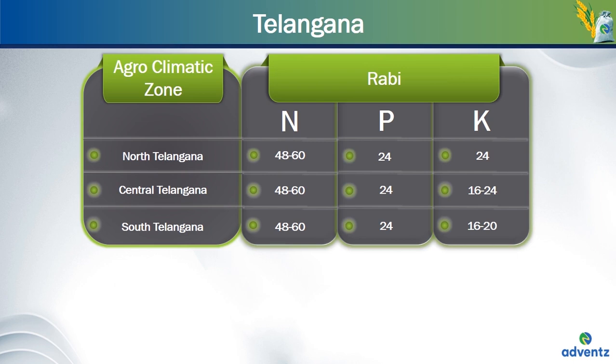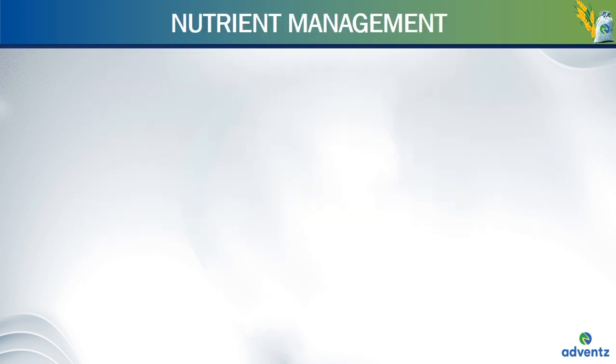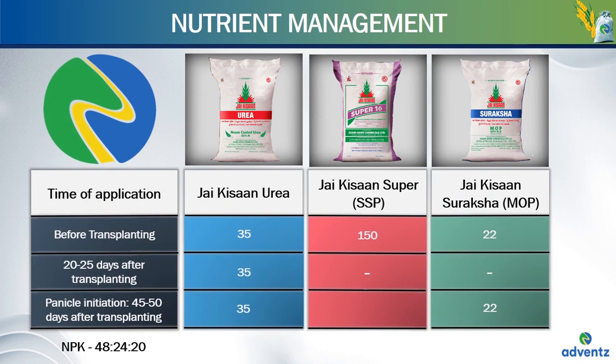For nutrient management, along with using Jai Kisan Urea and Jai Kisan Suraksha, there are two product options: Jai Kisan Supar and Jai Kisan Samrat. In Option 1, when we use Jai Kisan Urea and Jai Kisan Suraksha, we can use Jai Kisan Supar or SSP. The amount of Urea needed before transplanting is 35 kgs per acre, the amount of Supar or SSP needed before transplanting is 150 kgs per acre and the amount of Suraksha or MOP needed before transplanting is 22 kgs per acre.